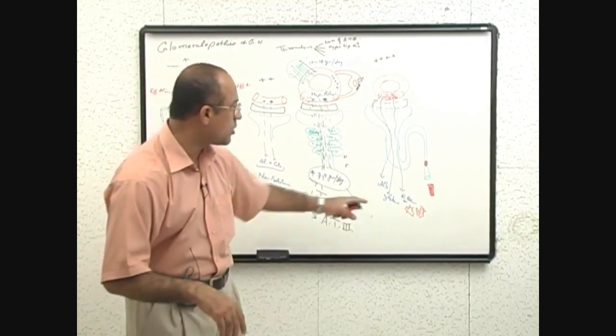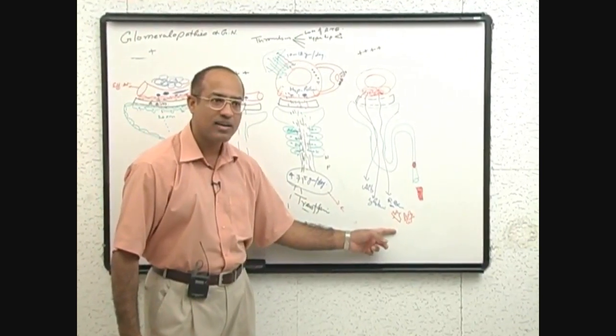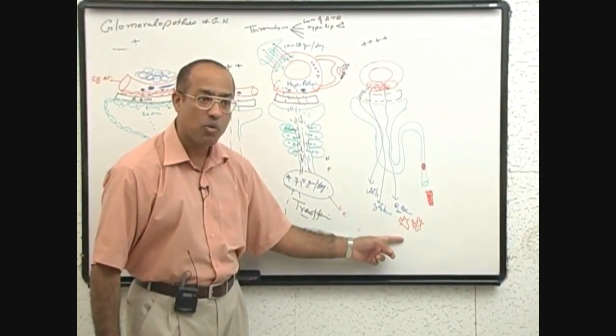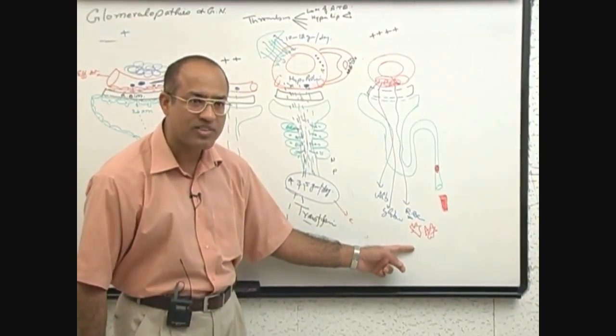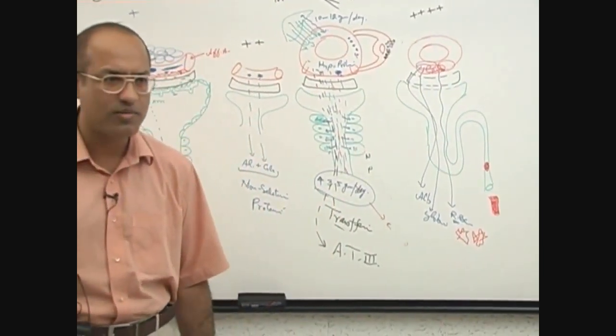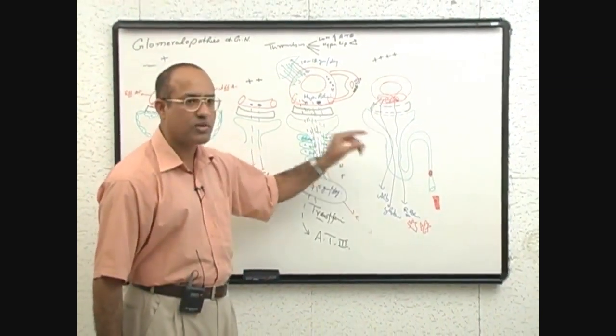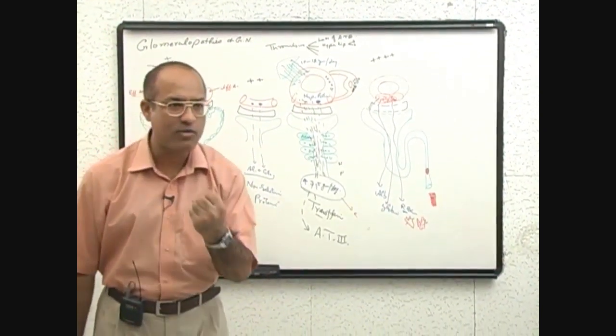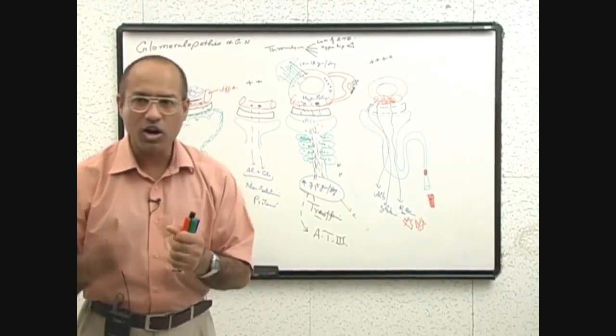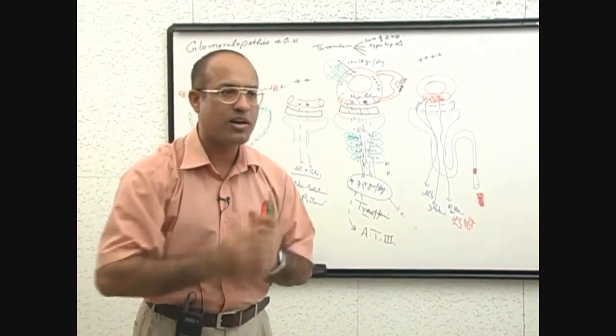So the patient is now developing not only albuminuria, globulinuria, he is developing hematuria with dysmorphic RBCs in urine and red cell casts. You have heard of this term? Do you think under these circumstances when glomeruli are swollen and inflamed, lots of glomeruli are infiltrated with inflammatory cells, do you think blood can easily pass through glomeruli?